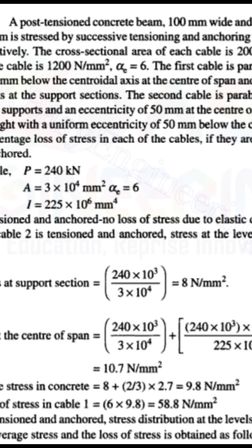The loss in cable 1 is calculated as the modular ratio α_e multiplied by the average stress. α_e = 6 and average stress = 9.8 N/mm², so 6 × 9.8 = 58.8 N/mm². This is the loss of stress in cable 1 due to the tensioning of cable 2.